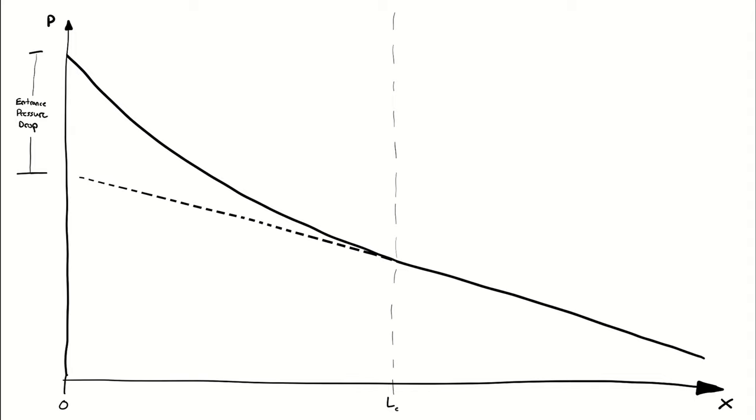The pressure drops relatively linearly in the fully developed region, but the developing region has a larger associated pressure difference. The difference between the pressure decrease along the developing region and how much the pressure would decrease if it were fully developed in that region is called the entrance pressure drop. Treating the entire pipe as being fully developed requires us to either account for the entrance pressure drop or neglect its effect.